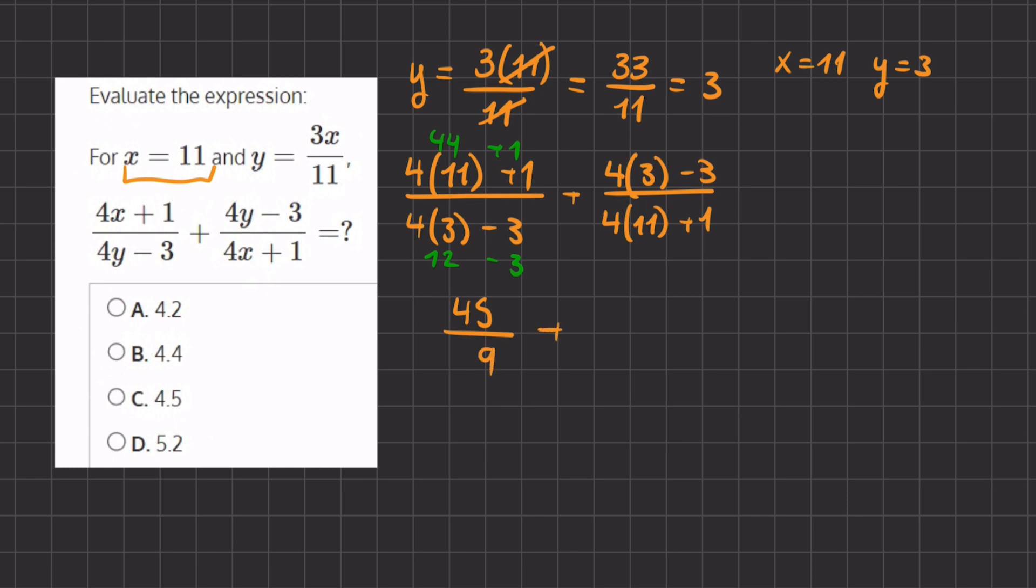Plus our second fraction. Here we have 12 minus 3, which gives us a 9, divided by 4 times 11, which is 44, plus 1, which gives us 45.